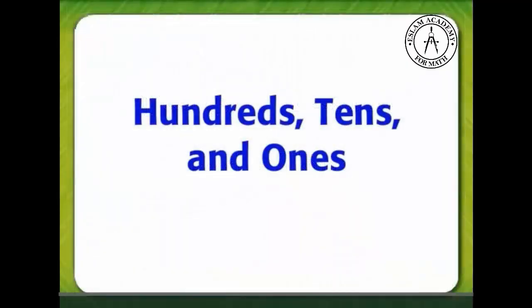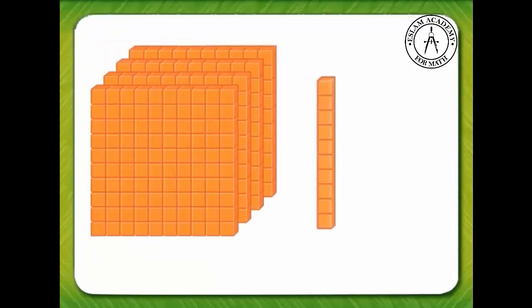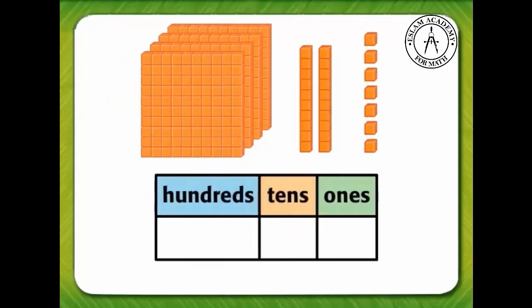There are 427 pennies in this jar. We can use hundreds, tens, and ones to show 427 — four hundreds, two tens, and seven ones. Now let's write 427 on the place value chart.